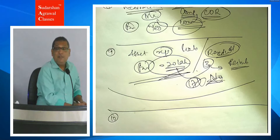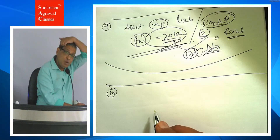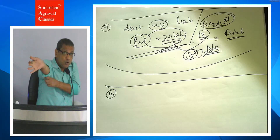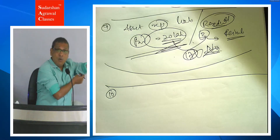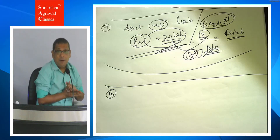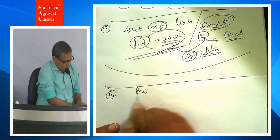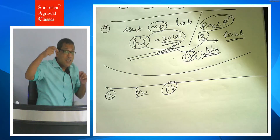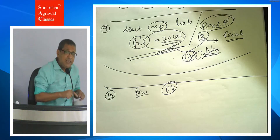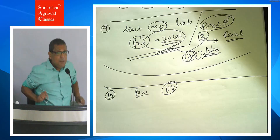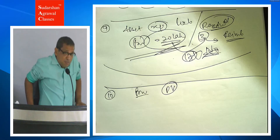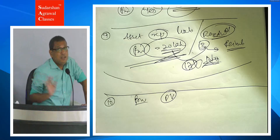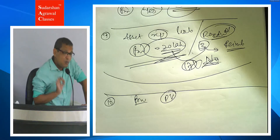As discussed when teaching AS 10, decommissioning liability also requires a provision, because when you remove the asset after 10, 15, or 20 years, that expense arises and you don't know the exact amount with certainty. So you must make a provision for it. That provision is made by bringing the future decommissioning cost to its present value (PV) today. Apart from this one item, AS 29 does not require discounting for any other provision. Only the decommissioning liability needs to be discounted — no other provisions are discounted as per AS 29.